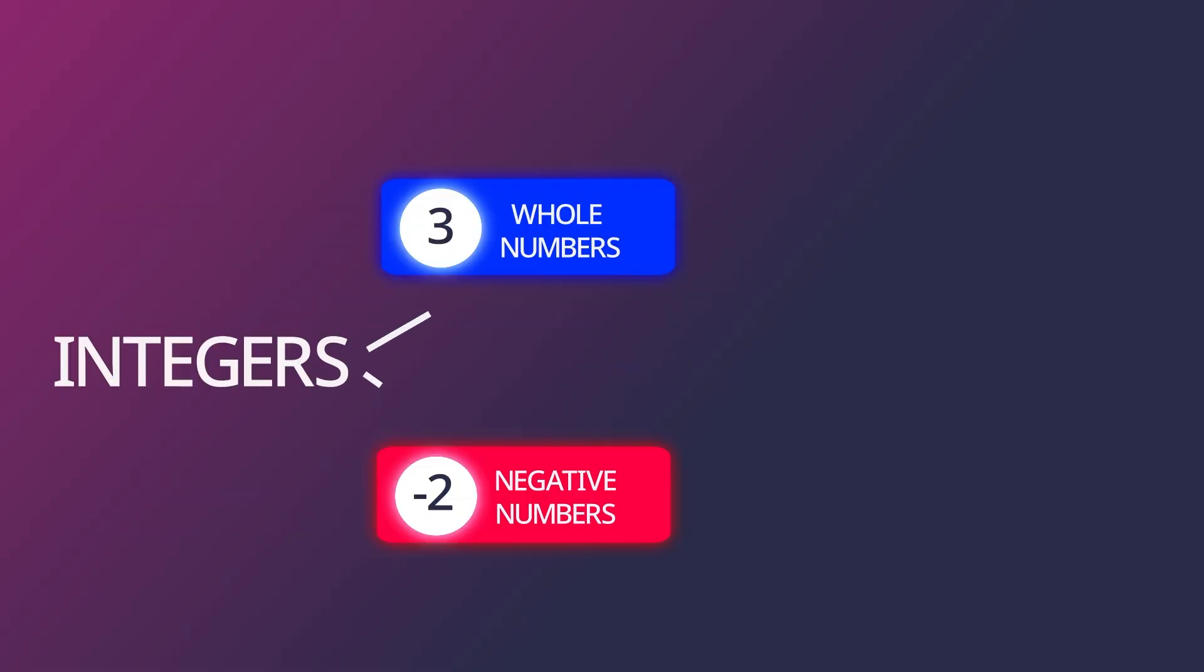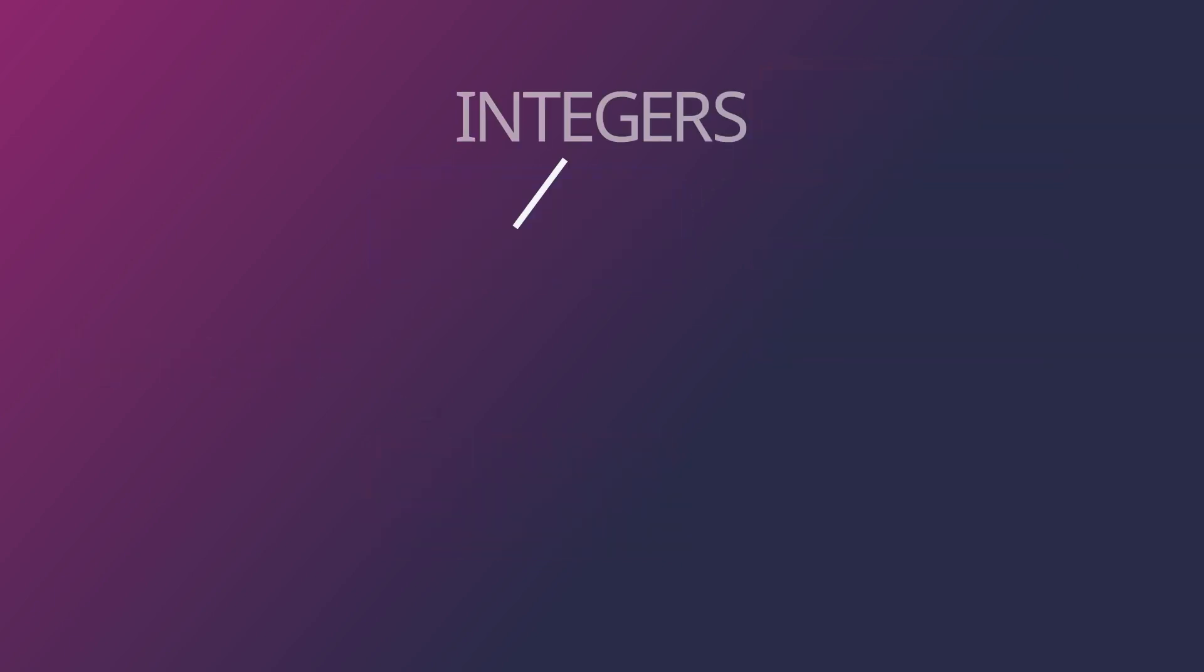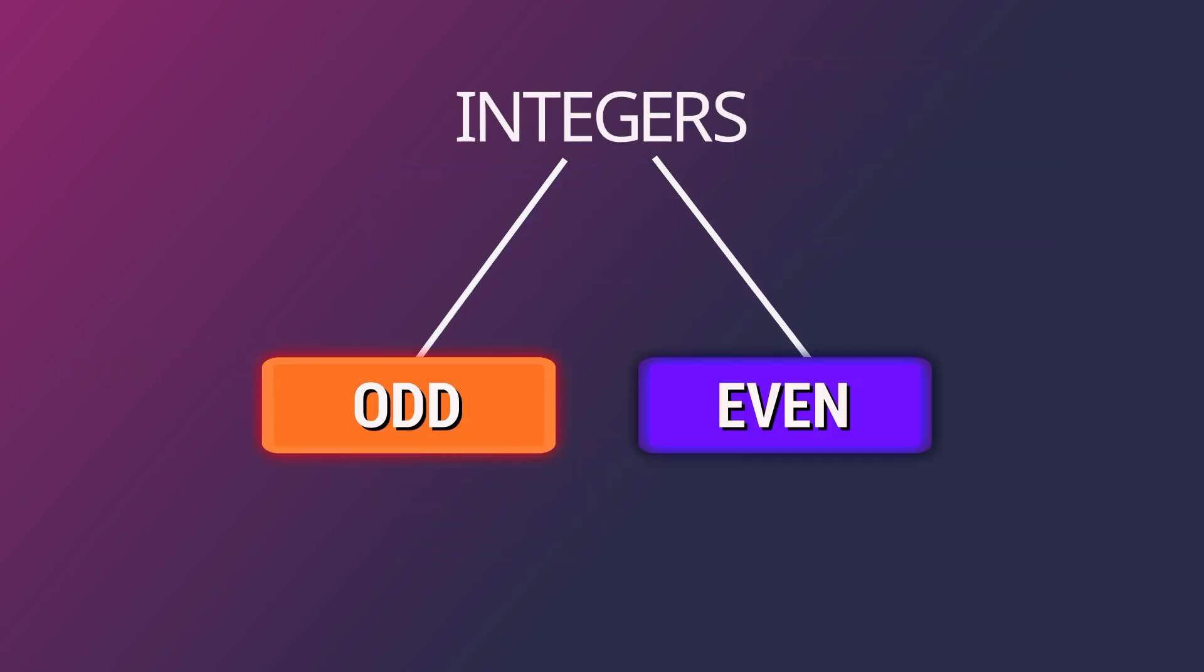Now that we know integers are whole numbers that are positive and negative, including the number zero, we also want you to learn that we can divide integers further into odd and even numbers.